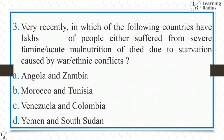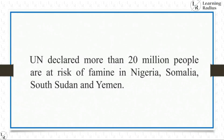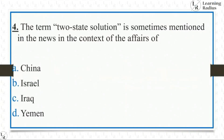The most appropriate answer is Yemen and South Sudan, from a 2018 background. The UN declared that more than 20 million people are at risk of famine in Nigeria, Somalia, South Sudan, and Yemen.